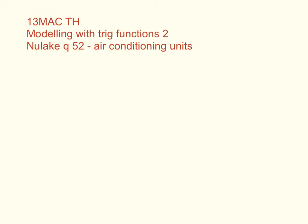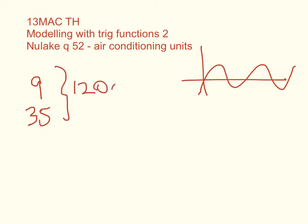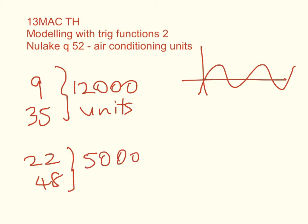In this question we're looking at weekly sales of air conditioning units, and we're told that they could be modeled by a sine curve. We're looking at the weekly sales values in week 9 and week 35 hitting a maximum of 12,000 units, and in week 22 and week 48 a minimum of 5,000 units. We're forming a model that goes from the start of the year in week 0 to the end of the year in week 52.